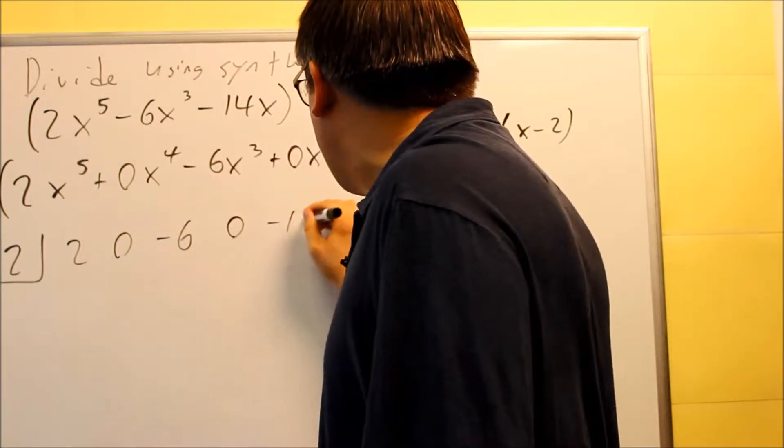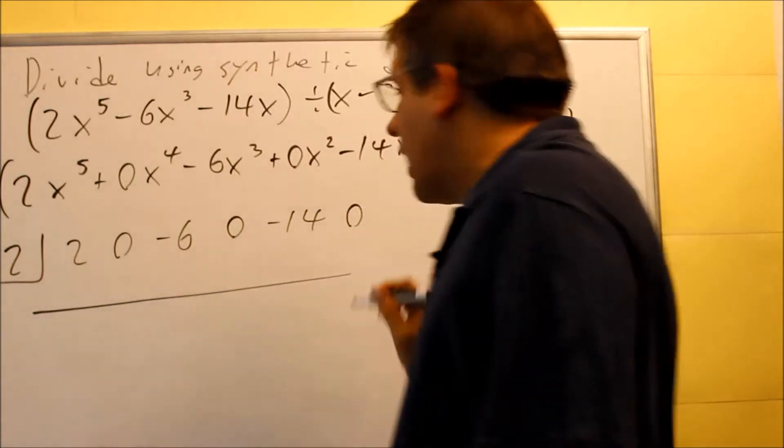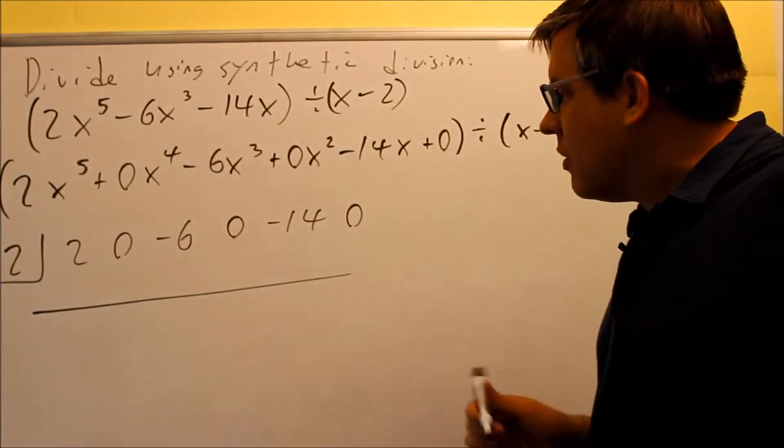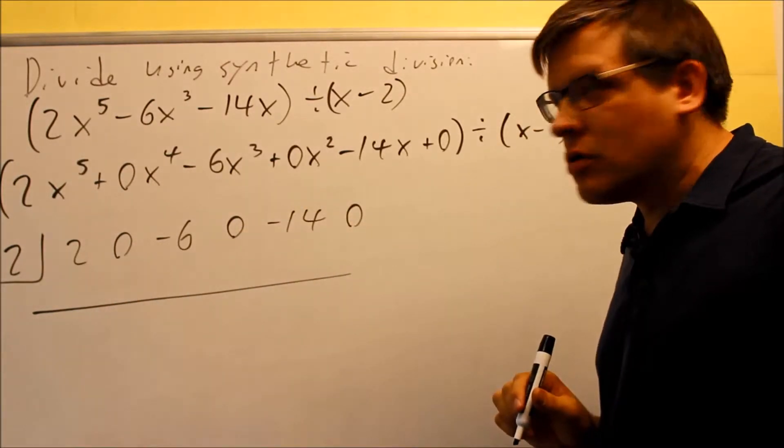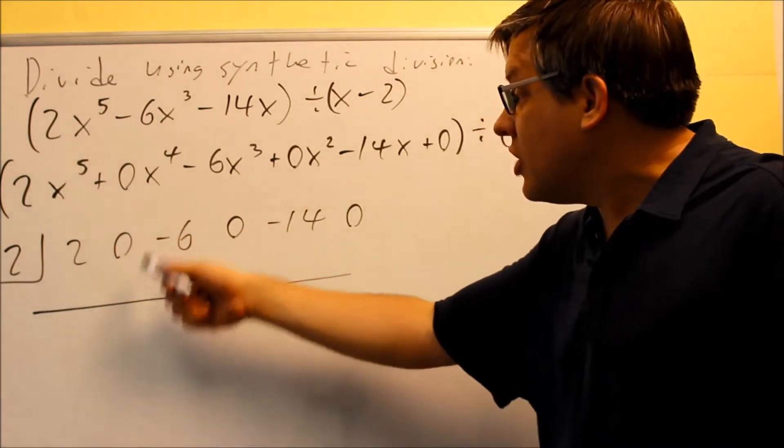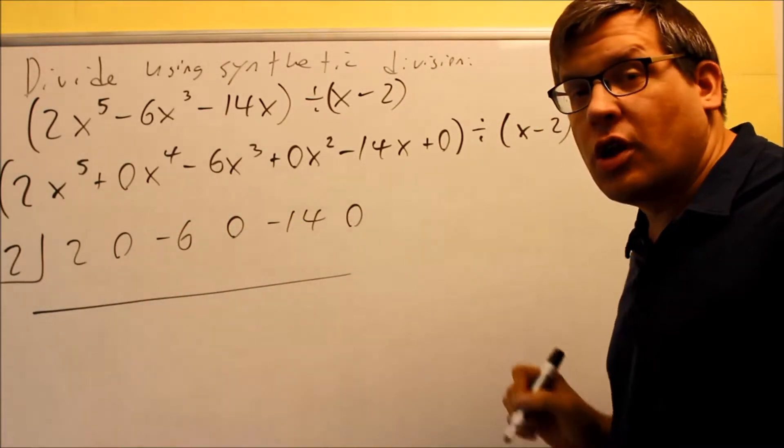negative 6, 0, negative 14, 0. So I have all that, and I have my line on the bottom there. This is the correct setup. Three zeros in there for placekeepers. That way we're guaranteed to be adding the correct numbers together all the way through. The 0 on the end guarantees we get our remainder.